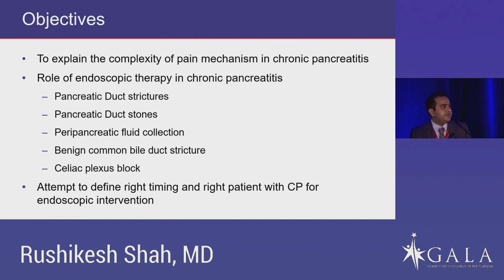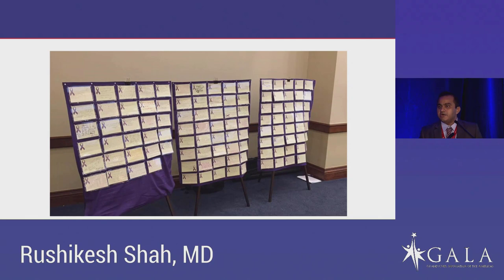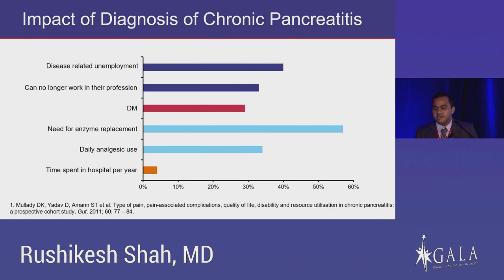I'd like to start with this picture — the wall of fame at National Pancreatic Foundation meetings. Every postcard has a handwritten story by a patient with chronic pancreatitis describing how this disease has affected their lives. When a patient gets diagnosed with chronic pancreatitis, disease-related unemployment is as high as 45%. Up to 40% of patients will no longer be able to work in their own profession. About 30 to 35% will be diagnosed with diabetes throughout their lifespan. 55% will require enzyme replacement therapy and 40% will be on daily narcotics.